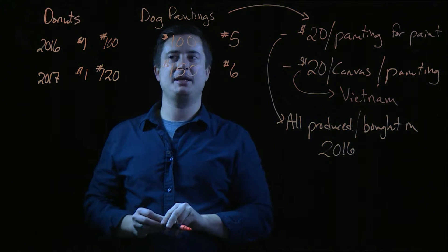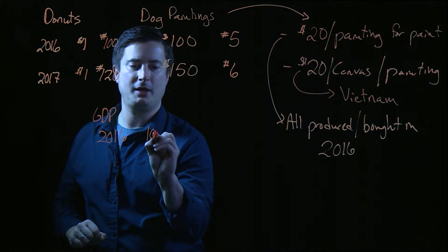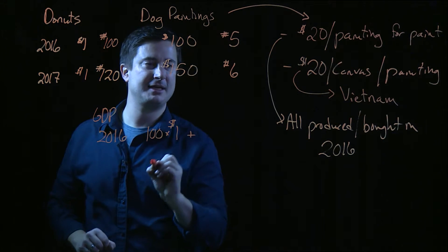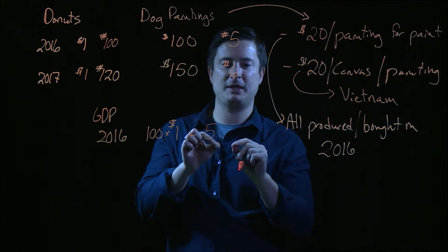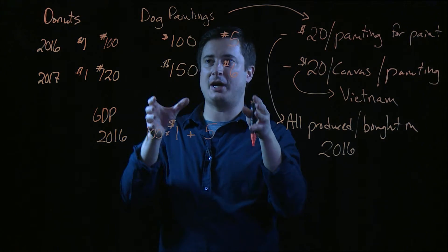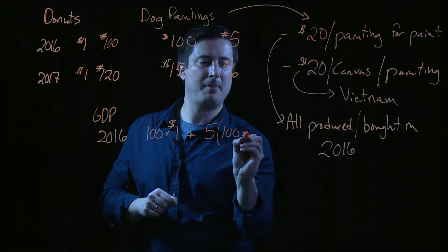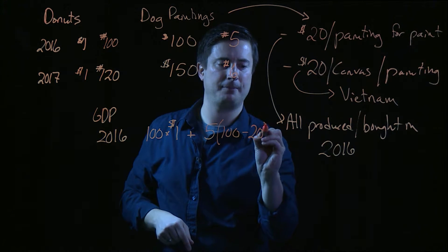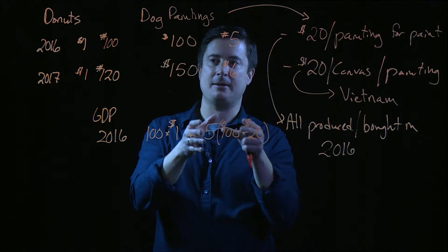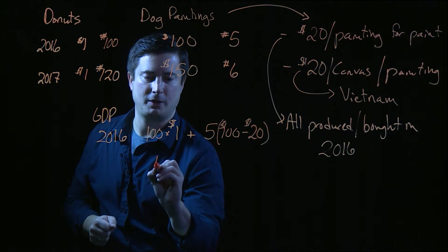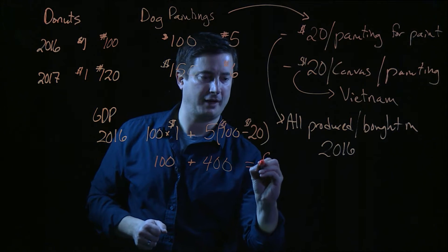Now given these complications, what is actual GDP in these two years? GDP in 2016 is exactly how we framed it before, at least with regards to donuts: one hundred times one dollar. But the actual value added in 2016 for services produced within the borders of the United States is not one hundred per painting — it's one hundred minus the value added for the canvas actually produced outside the country in Vietnam. So the actual value added produced in the US in 2016 is eighty per painting. This gives us one hundred plus five times eighty, or four hundred, so five hundred in total.